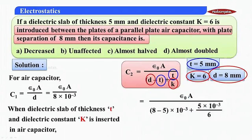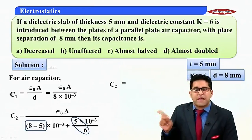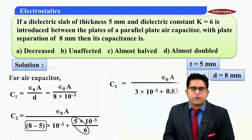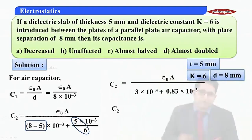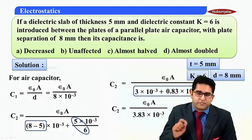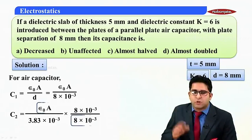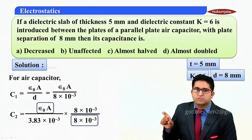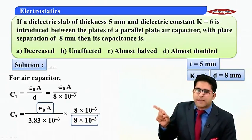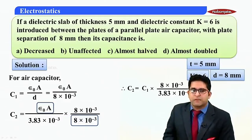Substituting the values into the formula for C2: the denominator becomes (8 minus 5) times 10 to the minus 3, plus (5 times 10 to the minus 3) upon 6. This gives 3 times 10 to the minus 3, plus 0.83 times 10 to the minus 3, which sums to 3.83 times 10 to the minus 3. So C2 equals epsilon-naught A upon 3.83 times 10 to the minus 3.